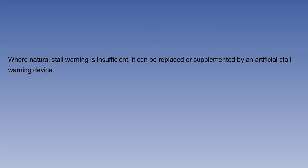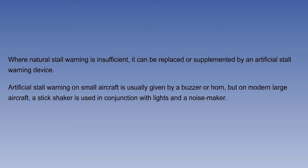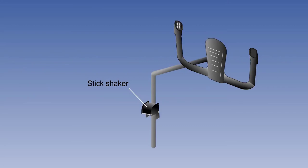Artificial stall warning on small aircraft is usually given by a buzzer or horn, but on modern large aircraft a stick shaker is used in conjunction with lights and a noisemaker. The stick shaker is intended to represent the aircraft's natural buffet by replacing it with a tactile warning. The noisemaker is added in parallel to ensure that the warning is noticed if the pilot's hands are not on the controls — for example, if the autopilot is engaged. The device consists of a pair of electric motors, one on each control column, rotating an eccentric weight to generate vibration.